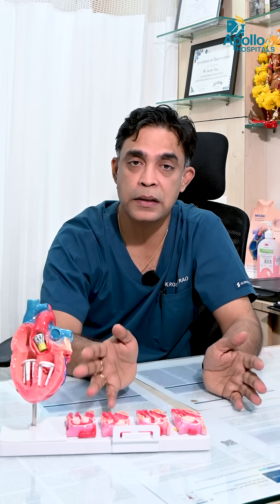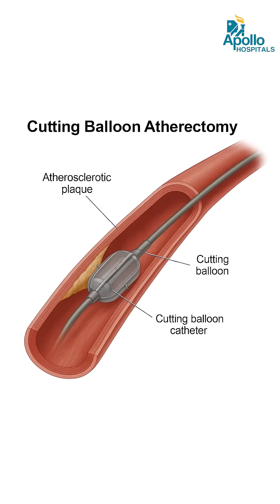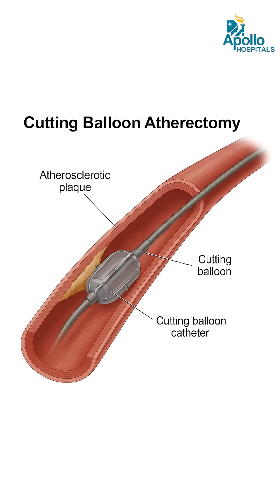When there is superficial and deep calcium in a large artery, intravascular lithotripsy is the choice we make. If the calcium is in a focal area — not diffuse — and it is less in amount and deep, then we use a cutting blade to open up the artery.